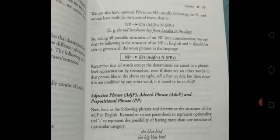NP arrow (D) (AdjP)+ N (PP)+. Remember that all words except the determiner are raised to a phrase level representation by themselves, even if there are no other words in that phrase. Like in the above example, tall is the first adjective, but since it is not modified by any other word, it is raised to be an adjective phrase.